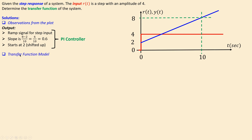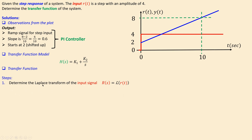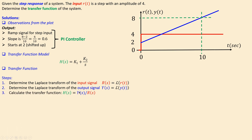The transfer function model for this case will be the gain plus the integral part, where we have K1 and K2 to determine. To find the transfer function, we look at the Laplace transform. We determine the Laplace transform of our input signal, which is capital R, and then determine the Laplace transform of the output signal, which is capital Y. We will use these to calculate the ratio Y over R.